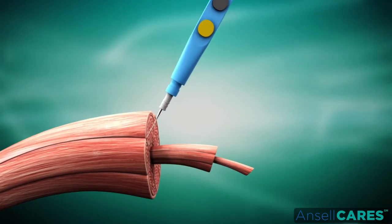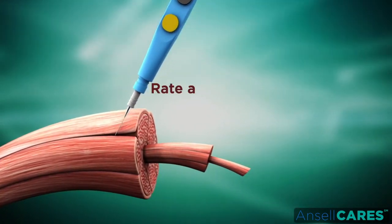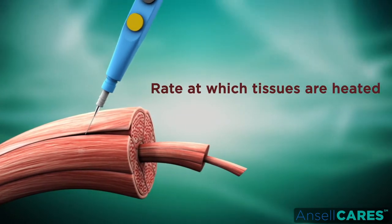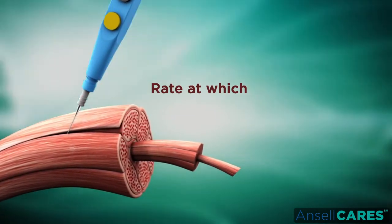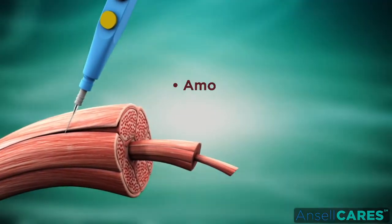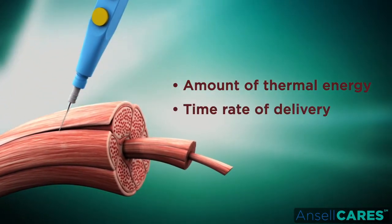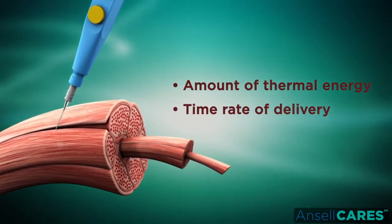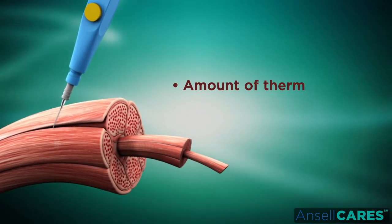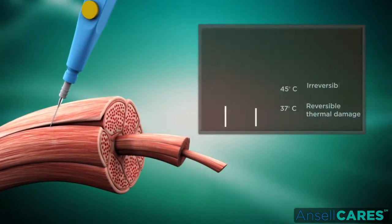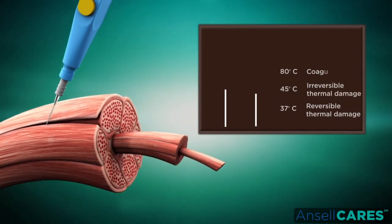The heating effects produced are central to the desired function of the electrosurgical instrument. The rate at which tissues are heated plays a crucial role in determining clinical effect. The amount of thermal energy delivered and the time rate of delivery will dictate the observed tissue effects. In general, below 45 degrees Celsius, thermal damage to tissue is reversible.